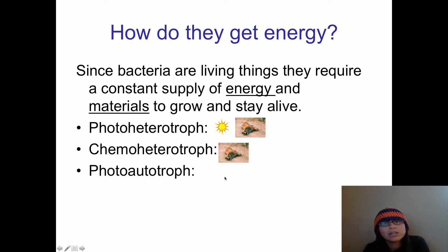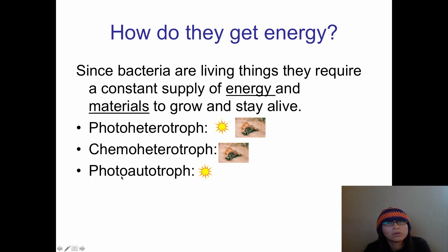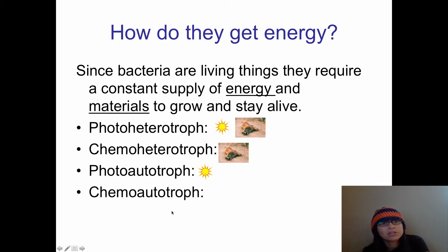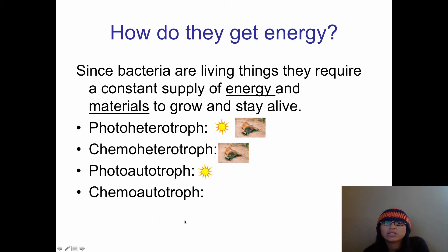Other bacteria can be photoautotrophs — a photoautotroph is an autotroph that gets its energy only from the sun, so photo plus autotroph means it just gets energy from the sun. And finally, the last group are chemoautotrophs — these are autotrophs that don't get energy from the sun but get energy from inorganic compounds. A lot of bacteria that live near ocean floor vents get their energy that way.